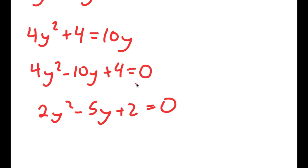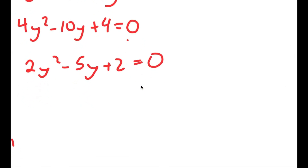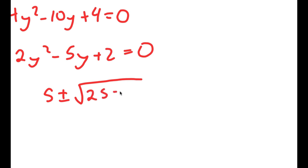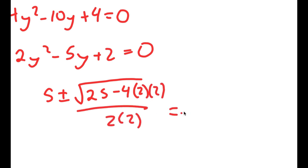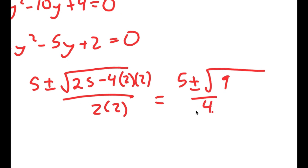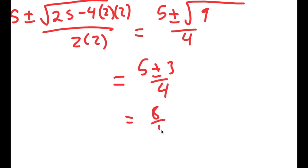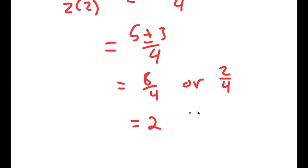You have to use the quadratic formula to solve this. So you get positive 5 plus or minus the square root of b squared — negative 5 squared is 25 — minus 4 times a, which is 2, times c, which is 2, all over 2a. This equals 5 plus or minus the square root of 25 minus 16, which is 9, over 4. Which equals 5 plus or minus 3, giving either 8 over 4 or 2 over 4. So 8 over 4 is 2, and 2 over 4 is one half.